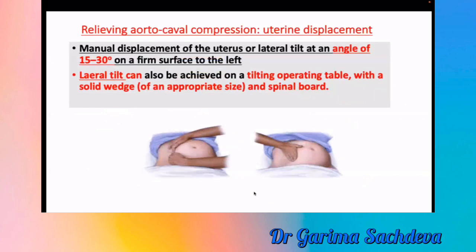For manual uterine displacement, deviate the uterus using one or two hands. Perform manual displacement or left lateral tilt at 15 to 30 degrees on a firm surface. Lateral tilt can also be achieved using a tilting operative table with a solid wedge of appropriate size and spinal board.